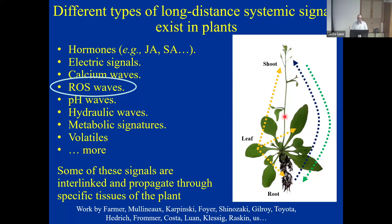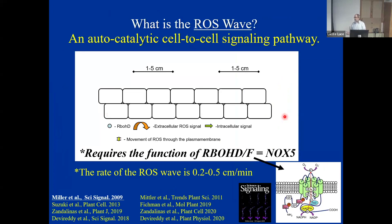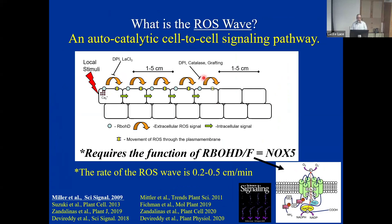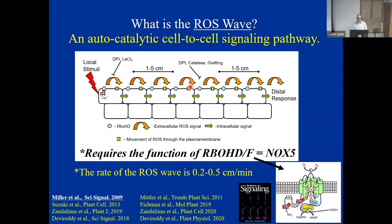I'm going to focus primarily on the ROS wave, a process that my lab discovered in 2009. The ROS wave is basically a cell-to-cell signaling pathway where, if a cell starts making ROS, the cell next to it will sense it and start making ROS, and this will propagate autocatalytically throughout the plant. I can come centimeters away from where I initiated it, do a grafting experiment or put an inhibitor, and block it. So it is really not diffusion.